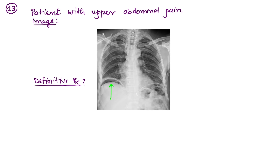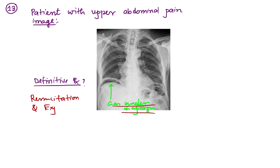Coming to question number 13: a patient with upper abdominal pain — an image was given showing gas under the diaphragm. This is also known as the reverse mustache sign, commonly indicating pneumoperitoneum. The definitive treatment for this case is resuscitation followed by exploratory laparotomy to repair the perforation site.